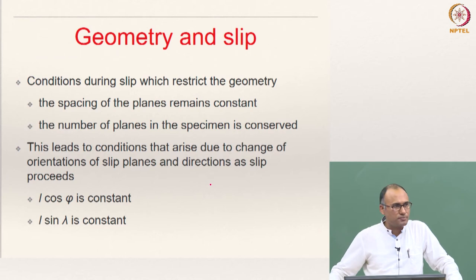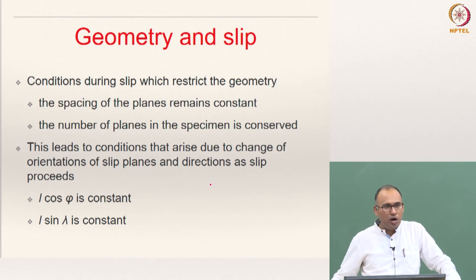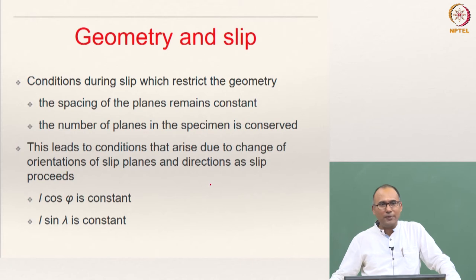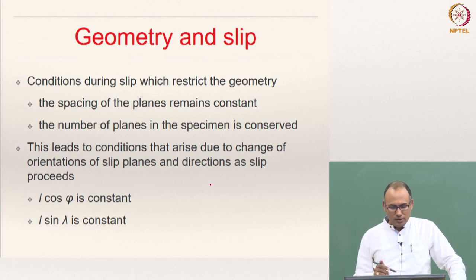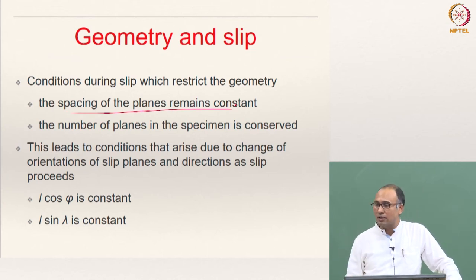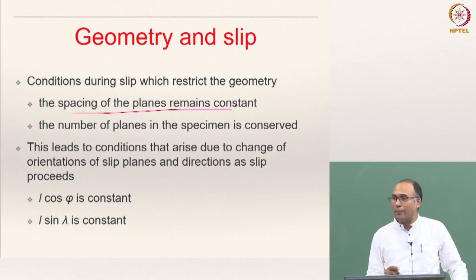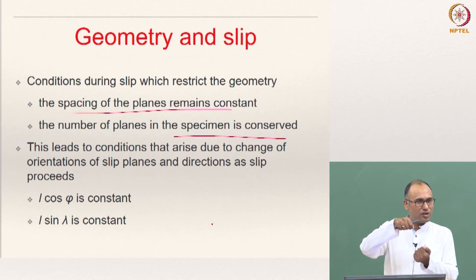When dislocation motion happens in a single crystal, the slip occurs but it has to follow certain geometric conditions. The spacing of the planes remains constant, so the interplanar spacing should remain constant and the number of planes in the specimen is conserved. You cannot have more planes just because you are causing dislocation.